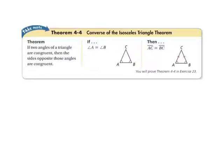The converse of the Isosceles Triangle Theorem states that if two angles of a triangle are congruent, then the sides opposite those angles are also congruent. So, since angle A is congruent to angle B, the side opposite angle A — side BC — is congruent to the side opposite angle B — side AC.